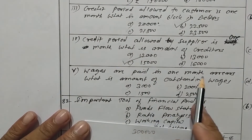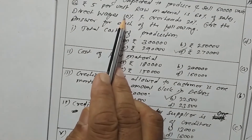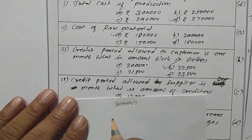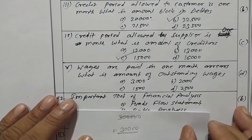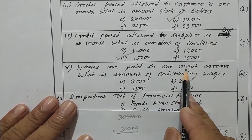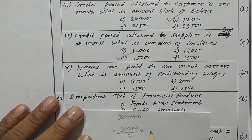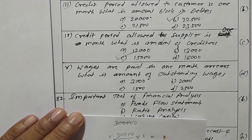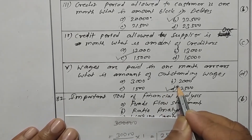Wages are paid in one month. Wages is 10 percent of sales, which is rupees 30,000. Divided by 12 into 1 month gives rupees 2,500 as outstanding wages. Option D is the correct one.